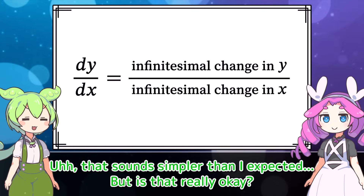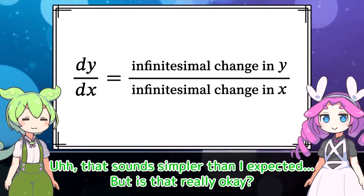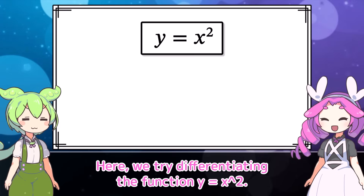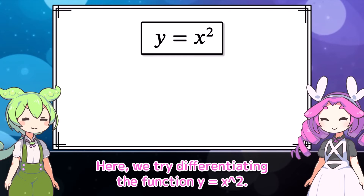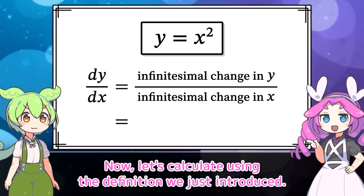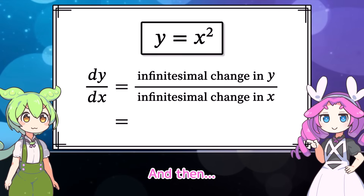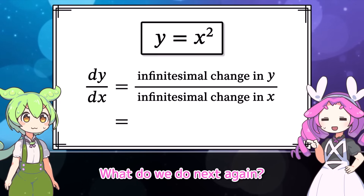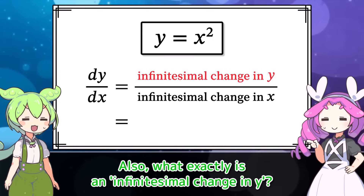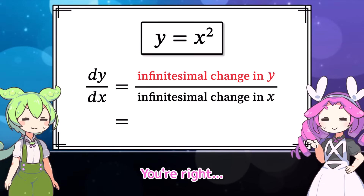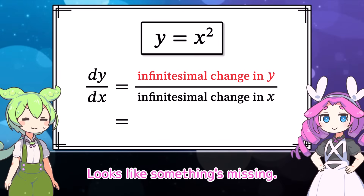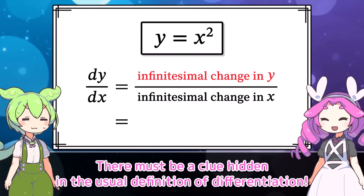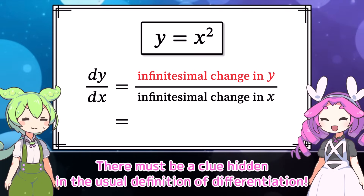That sounds simpler than I expected. But is that really okay? Let's look at an example — we try differentiating the function y equals x squared. Now let's calculate using the definition we just introduced. What do we do next? What exactly is an infinitesimal change in y? We can't go forward like this. Looks like something's missing. There must be a clue hidden in the usual definition of differentiation.